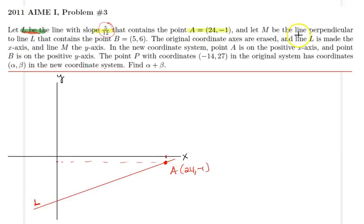So then let's keep reading the question. We are also told that line M is perpendicular to line L, and it contains the point B, 5, 6. So point B will be somewhere, so 5, 6 will be roughly, so if this is 24, probably 12 will be here.